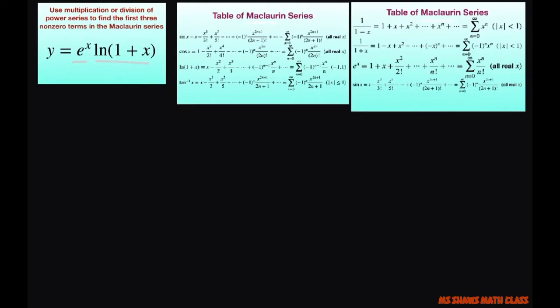So we have e to the x, and that is here. So I'll write that out. So that's going to be 1 plus x divided by 1 factorial plus x squared divided by 2 factorial plus x cubed divided by 3 factorial plus dot, dot, dot.